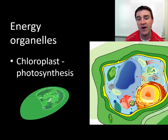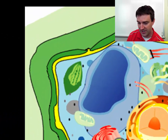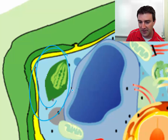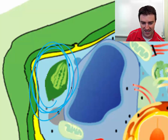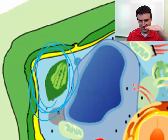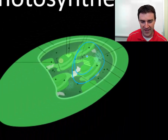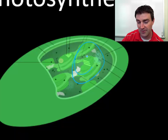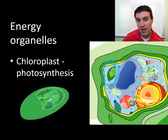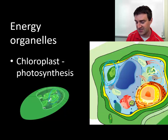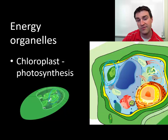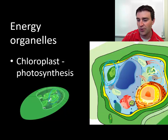Now let's switch to energy organelles. Here is the chloroplast inside a typical plant cell; it looks like there are little stacks of disks inside. The chloroplast performs photosynthesis, as we learned in the previous unit. Plants being autotrophs certainly do photosynthesis. There are also prokaryotic bacteria that do photosynthesis, but they just don't have specialized chloroplast organelles to do it.